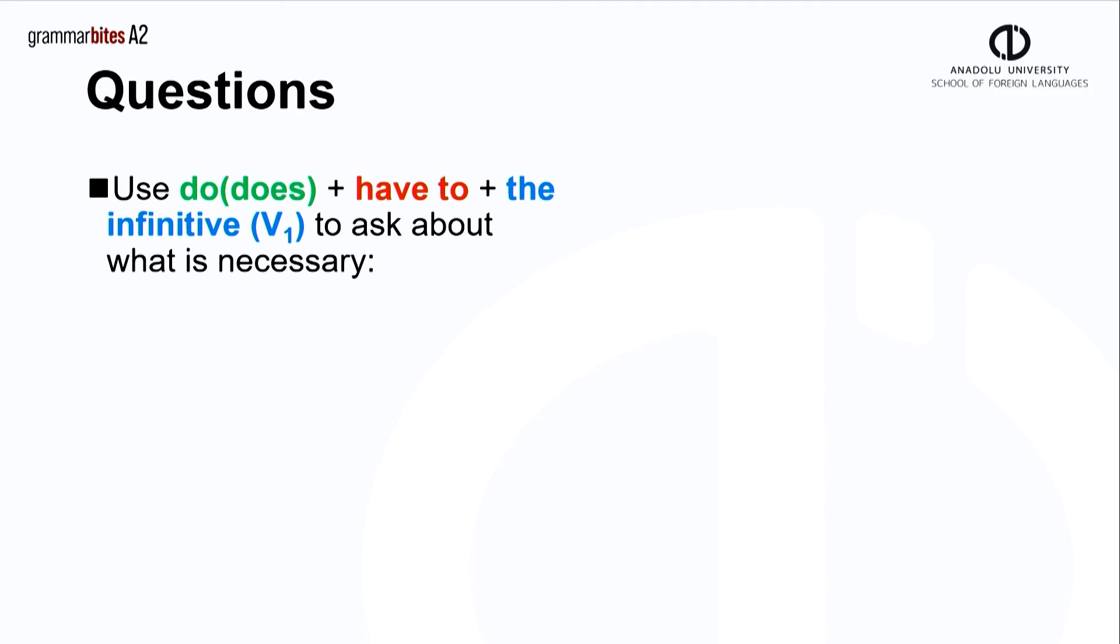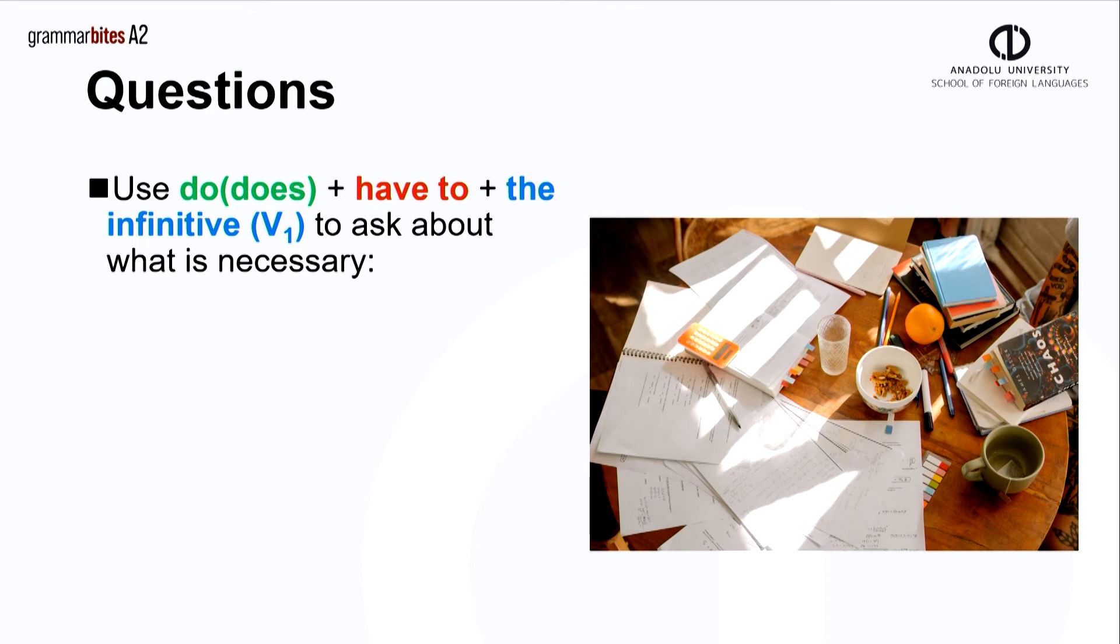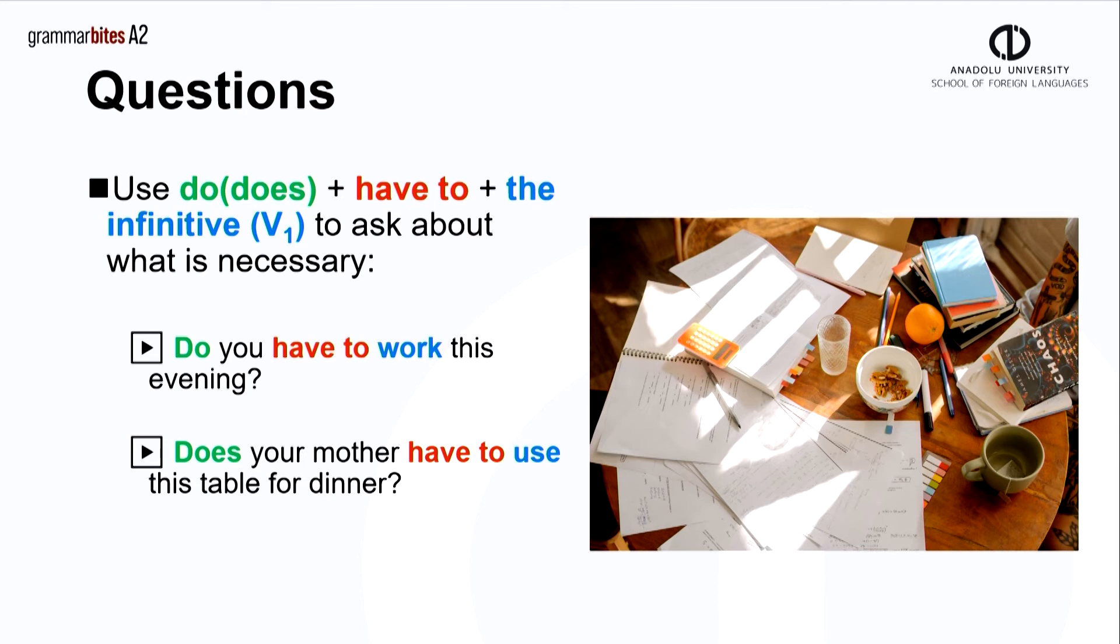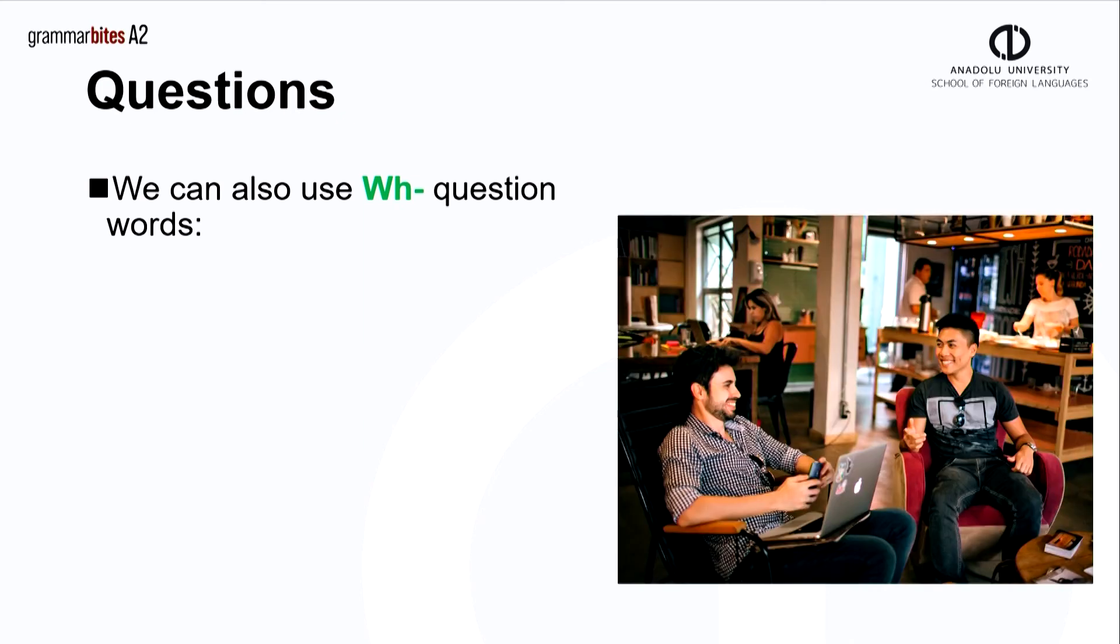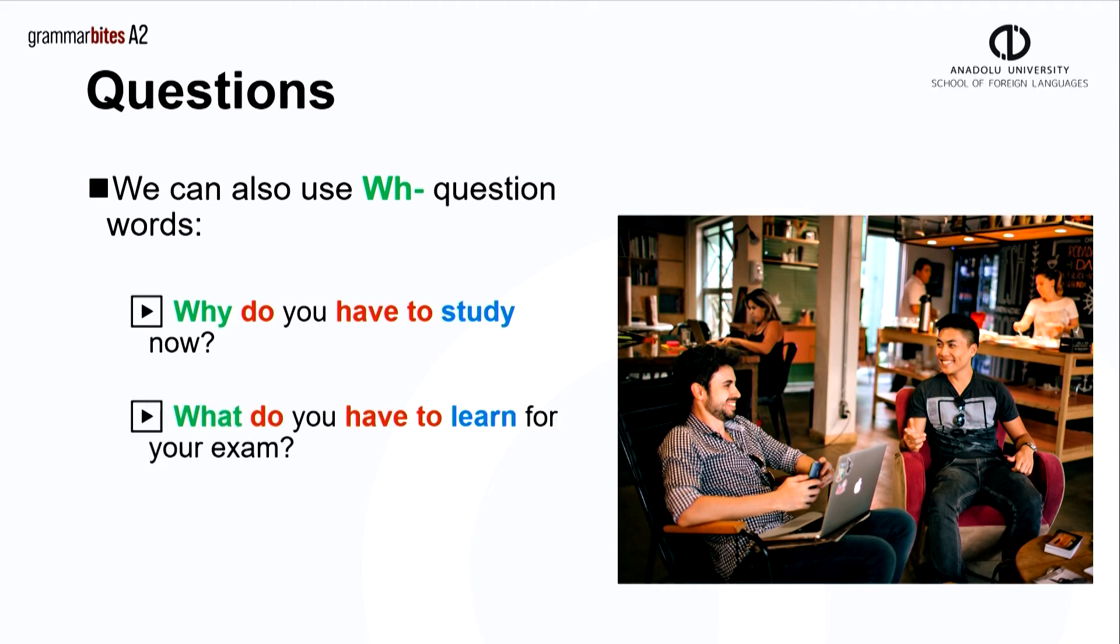We can make questions with have to by adding do, does. Do you have to work this evening? Does your mother have to use this table for dinner? We can also use WH question words. Here are some examples. Why do you have to study now? What do you have to learn for your exam? When does she have to leave?